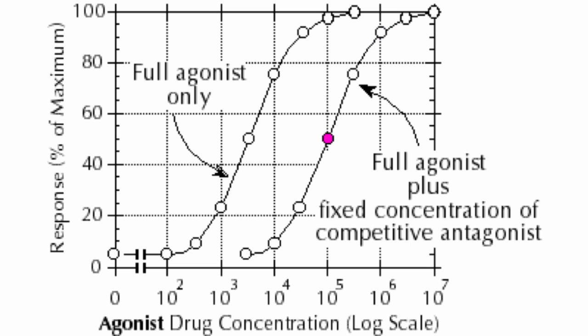The addition of a competitive antagonist causes the curve to shift to the right. More of the drug is necessary to achieve the same response because there is competition for the receptor site.